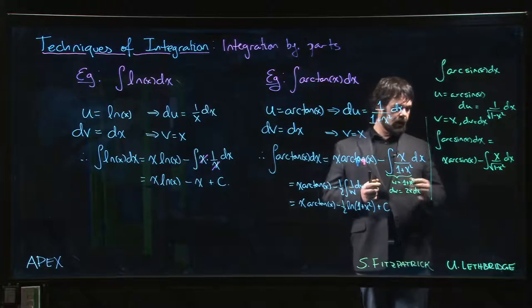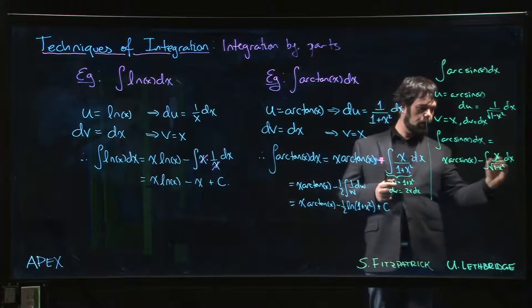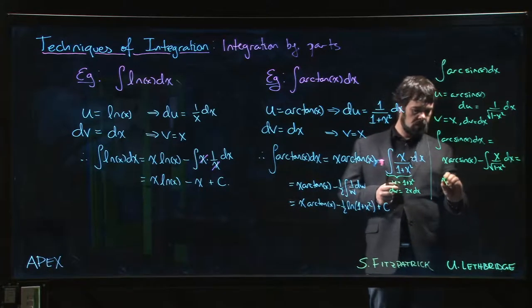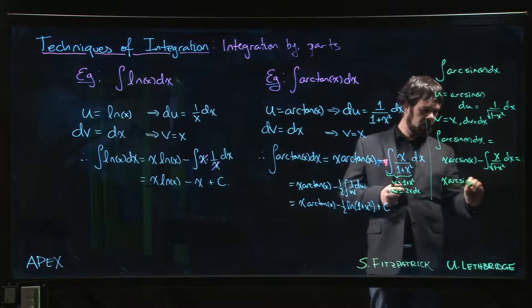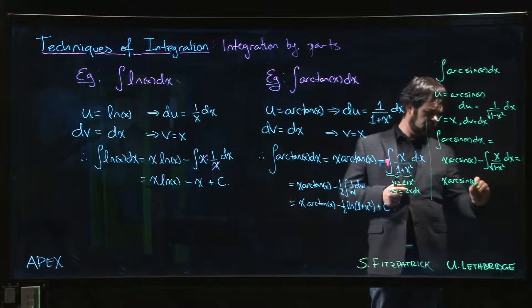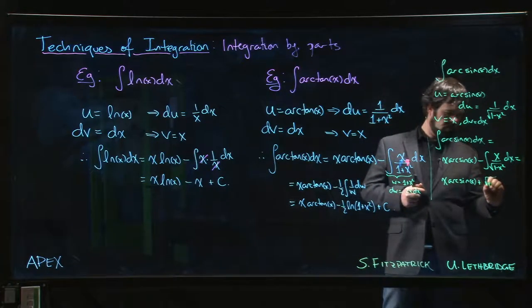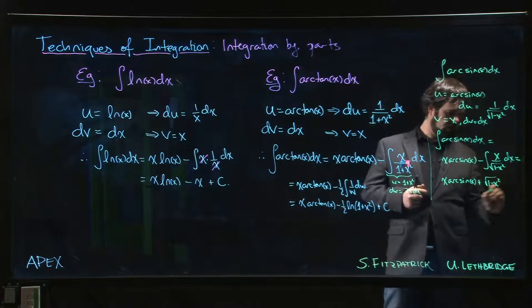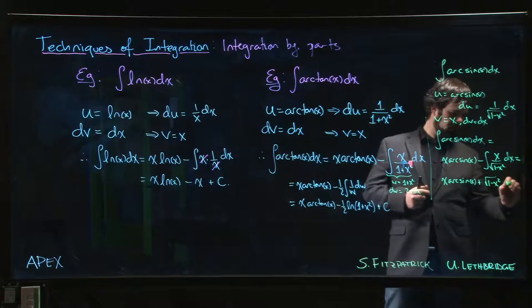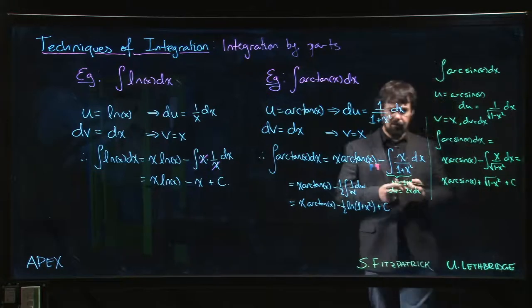So what you're going to get is x arc sine x. Let me just do it. That's going to be square root 1 minus x squared plus c.